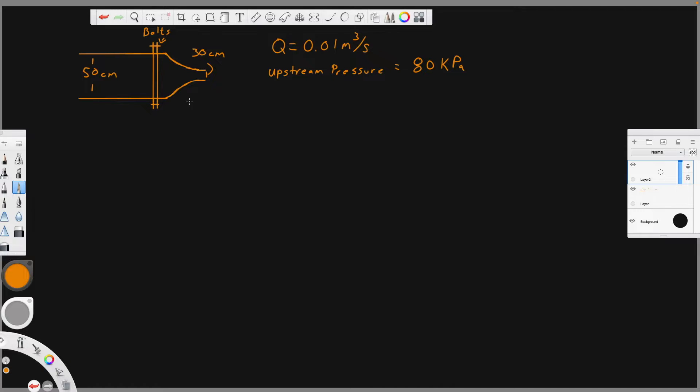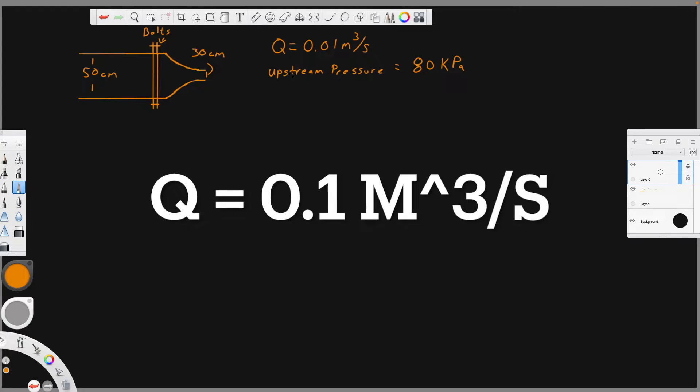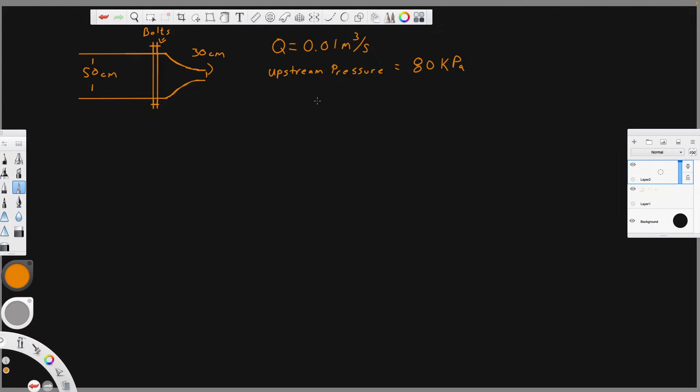In this case, we have this pipe and nozzle configuration, and we have a flow rate of 0.01 cubic meters per second. This time we're working in SI units, a little bit unusual for this channel. And we have an upstream pressure of 80 kilopascals. So now the question is, how do we solve this? It's basically going to be a sum of the forces and conservation of momentum.